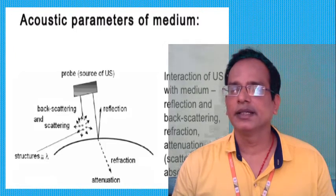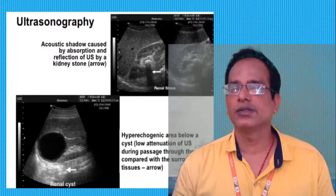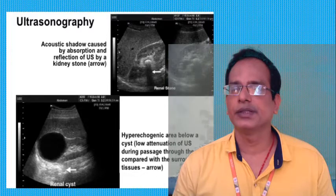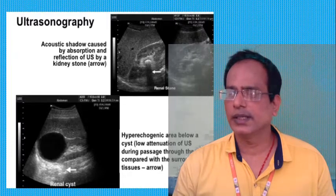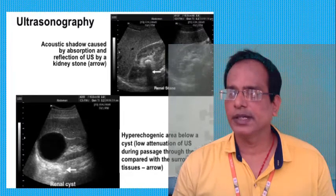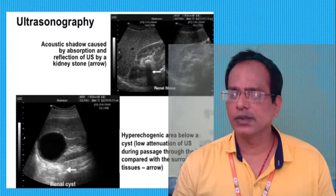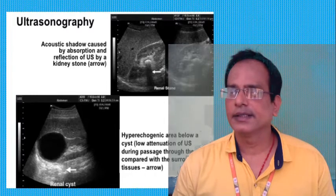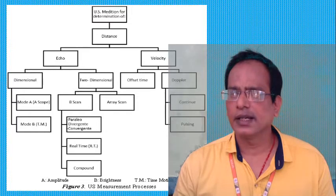In ultrasonography, acoustic shadows caused by the absorption and reflection of ultrasound are used in kidney stone analysis — any kidney stone can be easily found using this technique. The hyperechogenic area below the chest indicates low attenuation of ultrasound during passage through the chest compared with the surrounding tissues, as shown by the arrow.